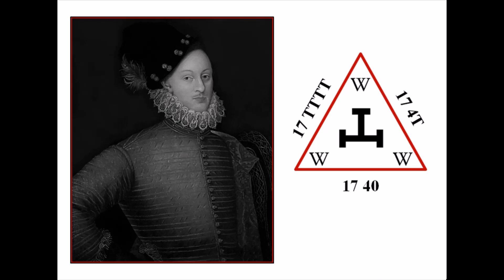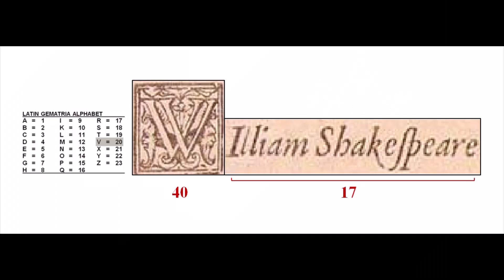If you've been following these videos, you know I learned from watching Alexander Waugh's videos that 1740 is a number that pertains to Edward de Vere, the 17th Earl of Oxford, and that it's used to encode information in the works of William Shakespeare. In this video, I'm going to show a great example of a 1740 Oxford code that might even convince some skeptics that there are legitimate encoded messages in Shakespeare.